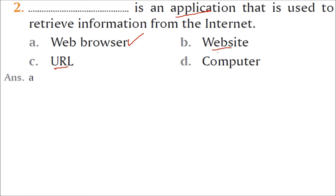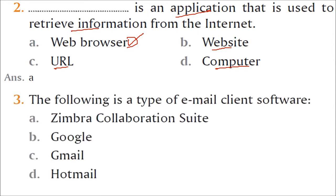Website comes when you put the URL inside your web browser like www.yahoo.com or google.com, and this you do on computer, laptop, or tablet. The following is a type of email client software. Email client software is used to send mail electronically. The answer is Zimbra Collaboration Suite.